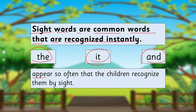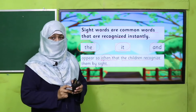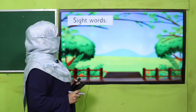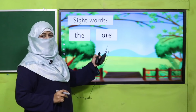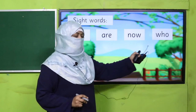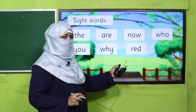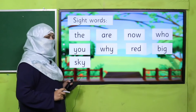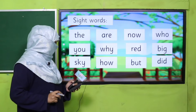Why? Because they appear so often that children recognize them by sight. You look at the word and you find out what it is. You need not sound it out, because these words come up so often — you have seen them so many times — that you already know them. Here are a few more examples of sight words. Read with me: the, are, now, who, you, why, red, big, sky, how, but, did, saw.